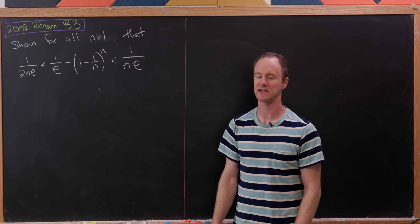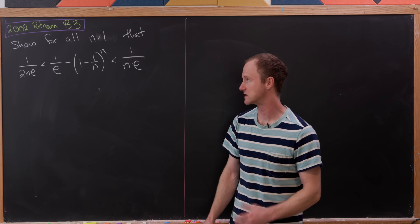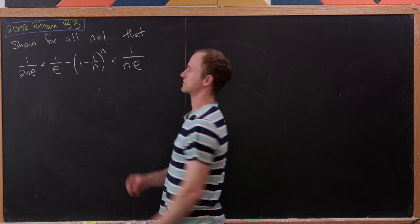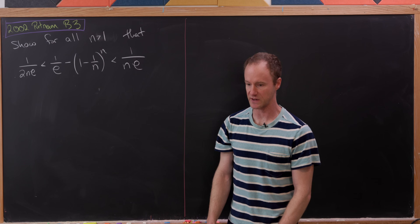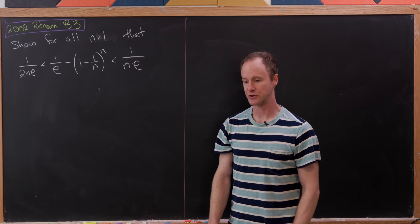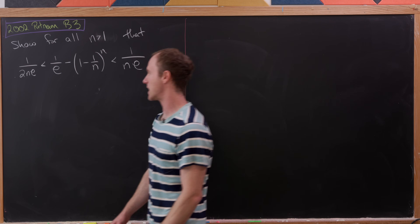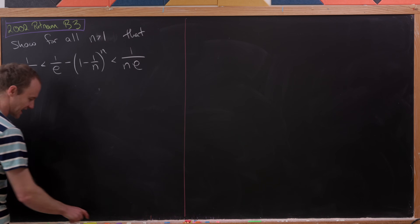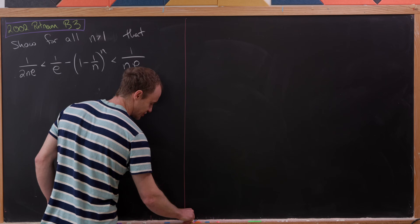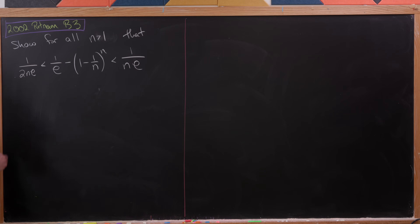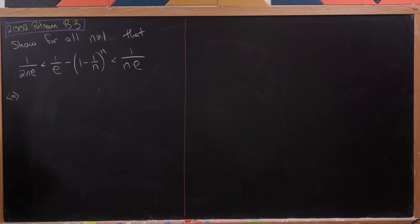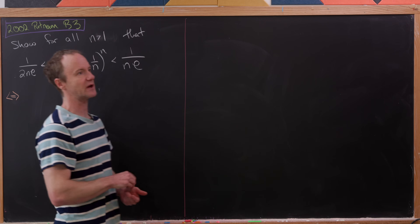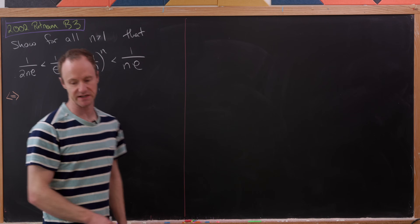This can be seen as an argument for (1 minus 1/n)^n approaching 1/e. The general strategy we're going to take is to continually manipulate this into equivalent inequalities until we get one that is clearly true.